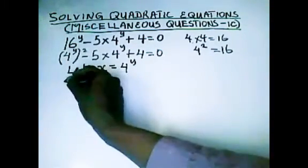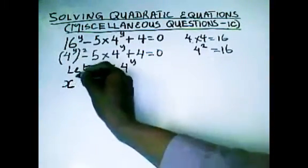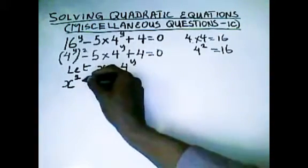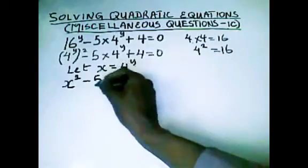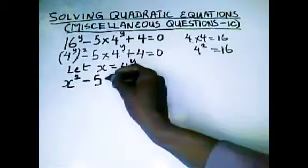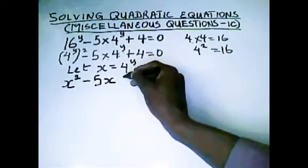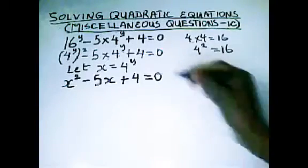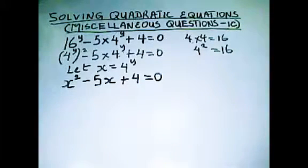So, over here, we have x^2, which is x squared. And then we have minus 5. Now, 5 times 4^y will become 5 times x. So, we have 5x, then plus 4 all equals to 0. So, there you have it. We have arrived at a quadratic equation.